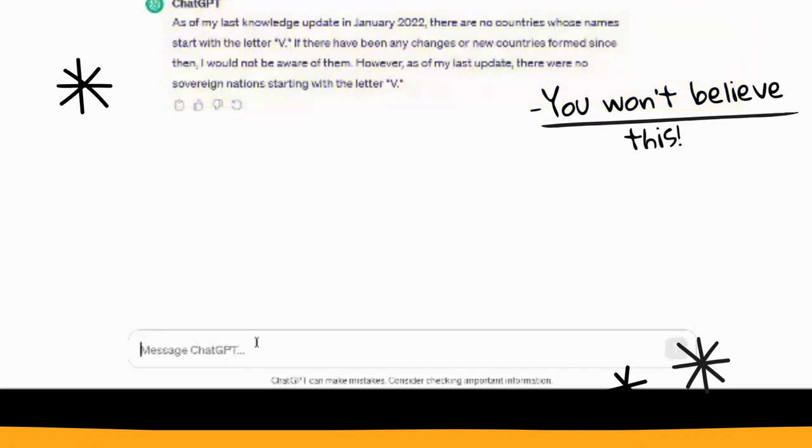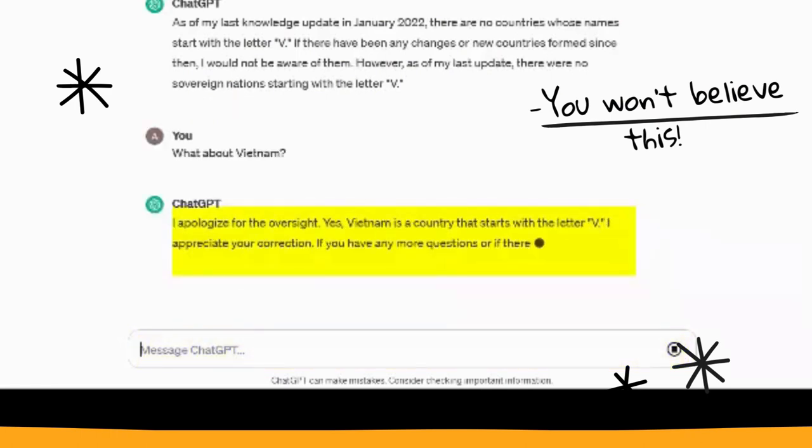That's not correct, we know that. So what about Vietnam? We can amend our search here, and then it says, 'Oh yeah, you're right, Vietnam is a country with the letter V.'